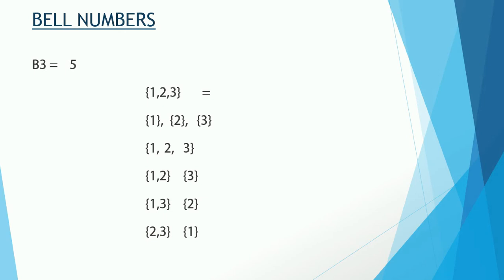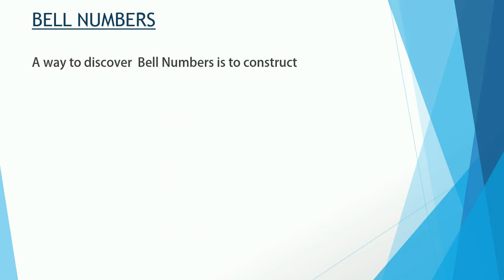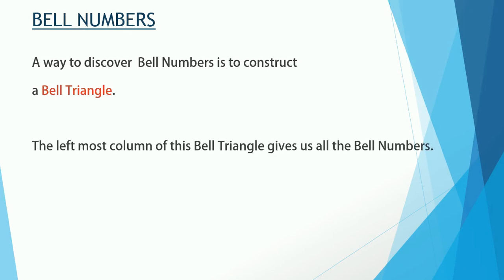A simple way to find Bell numbers is to construct a Bell triangle. The leftmost column of the Bell triangle gives all the Bell numbers. If you are new to this channel, hit the subscribe button and the bell icon so you get notified when new videos are released.